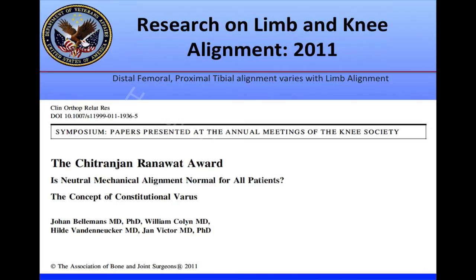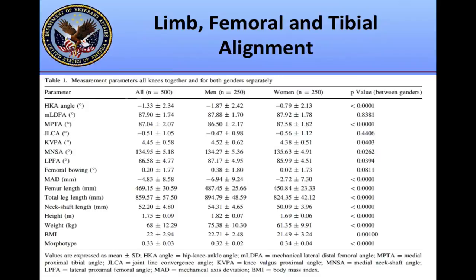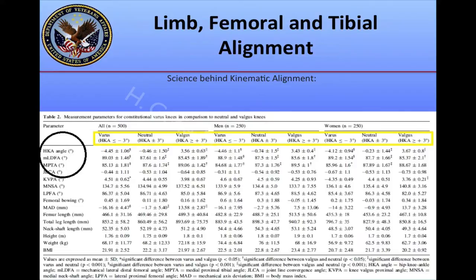Dr. Bellamins, in 2011, looked at neutral mechanical alignment and asked, is that normal for all patients? He also received the Ranawat Award at the Knee Society for this paper. Several important findings emerged: the hip-knee-ankle angle is in varus for the 500 patients he studied, more so in men than women. And when varus and valgus knees are broken down for both men and women, significant differences in the mechanical lateral distal femoral angle and the medial proximal tibial angle exist.